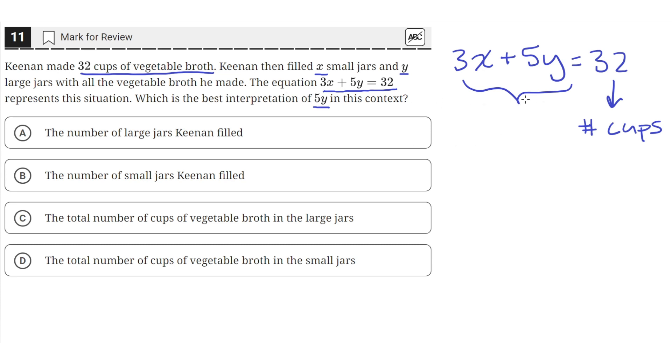In the context of this situation, this side should represent the total number of cups of vegetable broth. x here is the number of small jars, while y is the number of large jars.